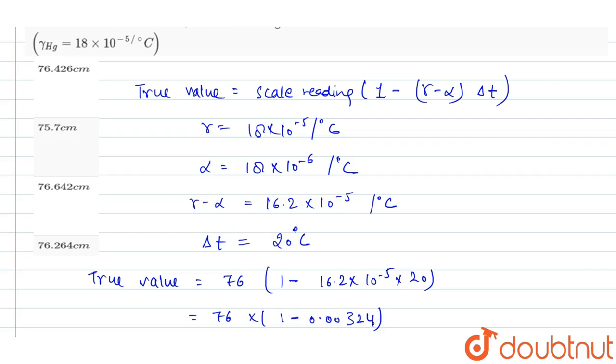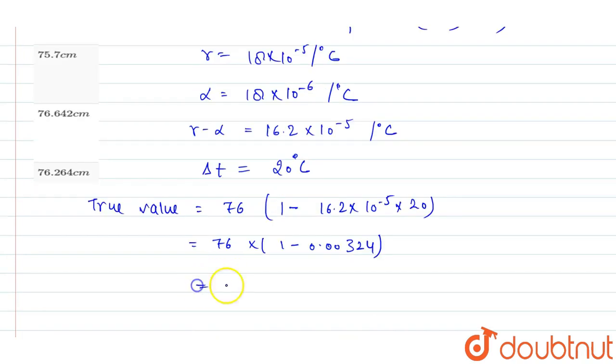Which will be ultimately equal to 75.7 cm. This is our final answer. 75.7 cm is the true value of the barometer at 20 degree Celsius.